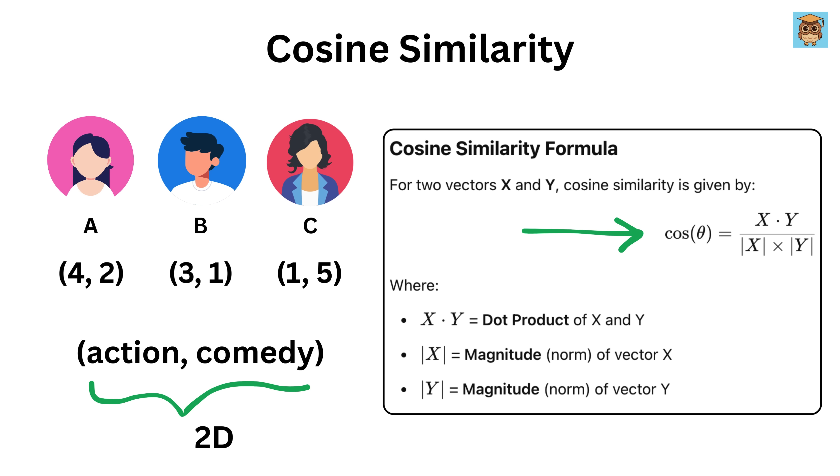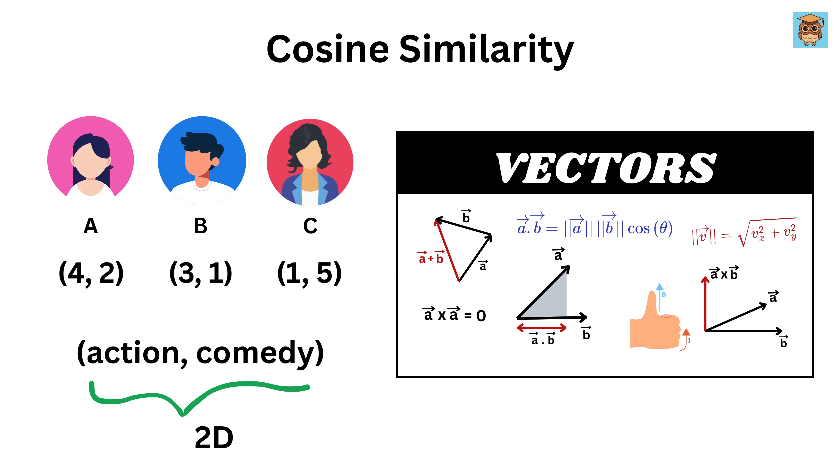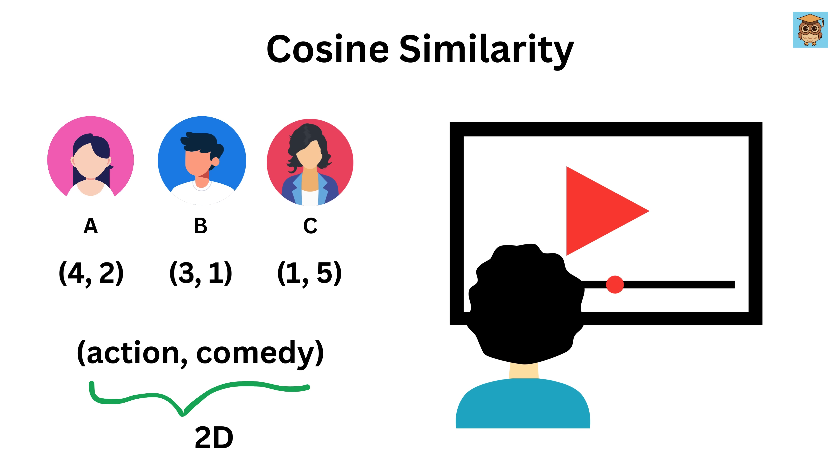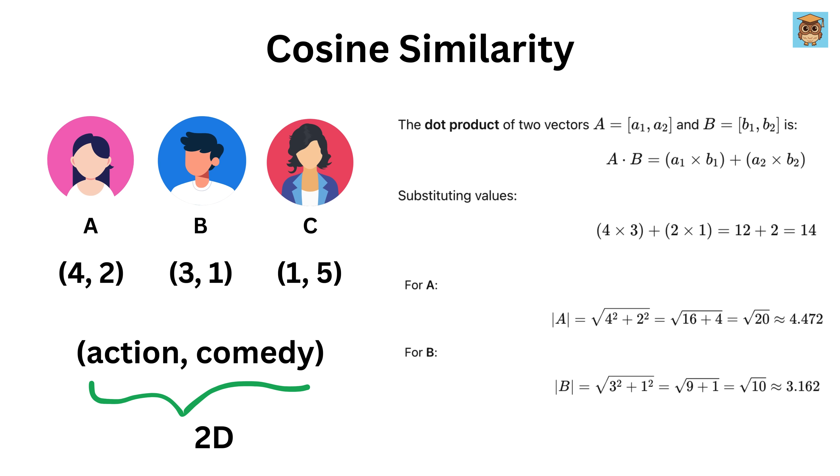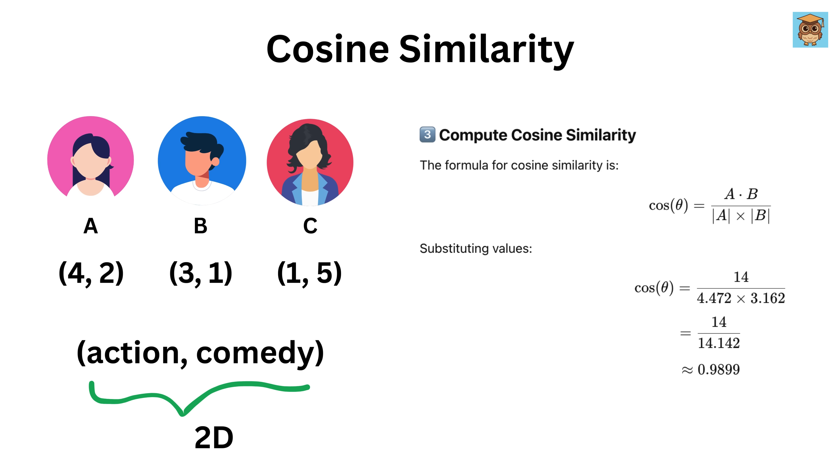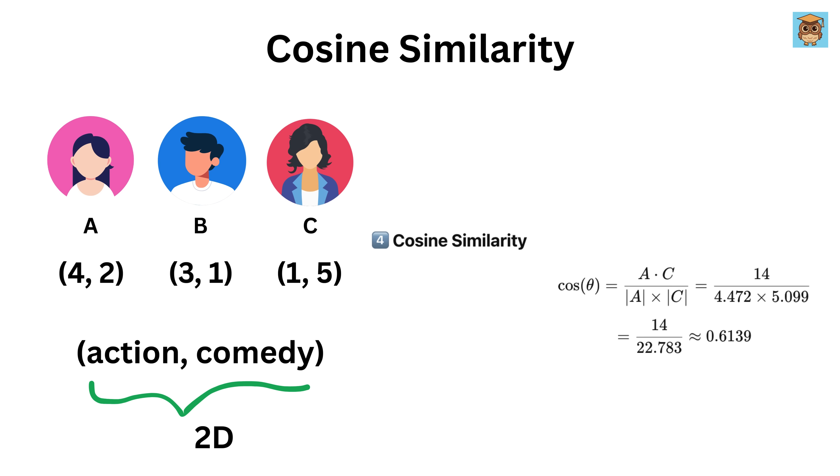If you don't know what a dot product or magnitude is, I have made an awesome video on vectors, and the link is in the description. First complete this video and watch it later. This thing gives the cosine of the angle between vector x and vector y. So between A and B it will be this, and between A and C it will be this.